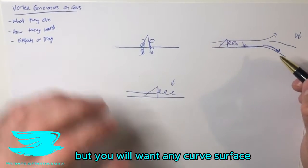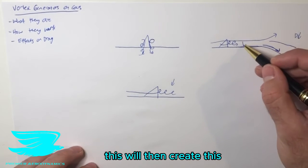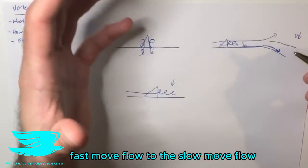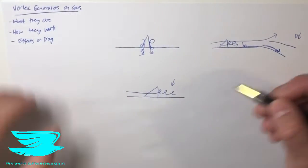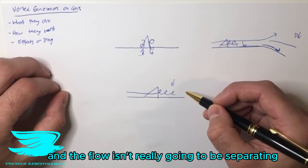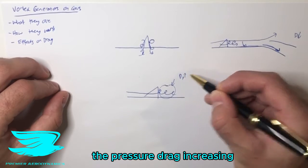But you can put them on any curved surface, or any surface really, where the flow does separate. This will then create this exchange of momentum from the higher fast-moving flow to the slower-moving flow. But if we don't have that, and the flow isn't really going to be separating, then all this is is just an additional wake, which results in the pressure drag increasing.